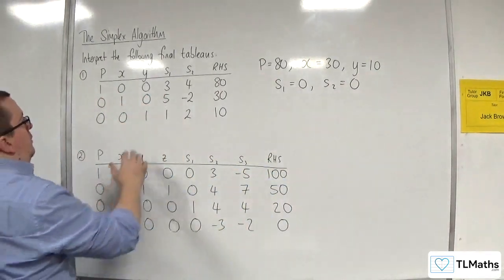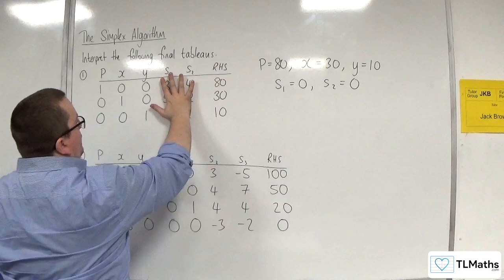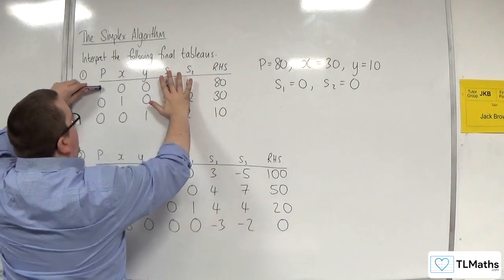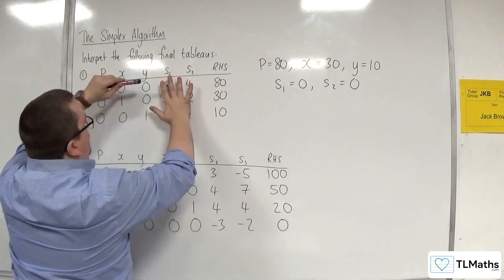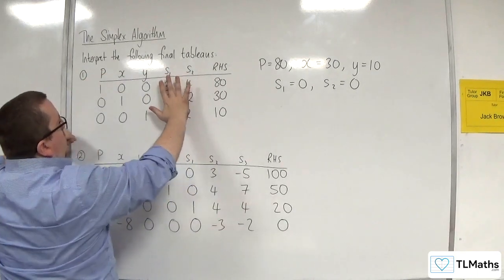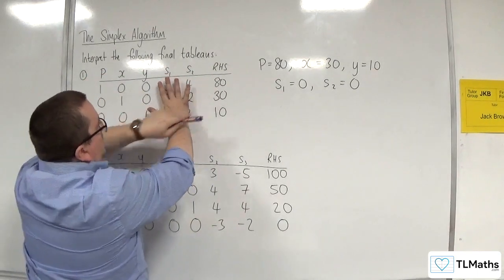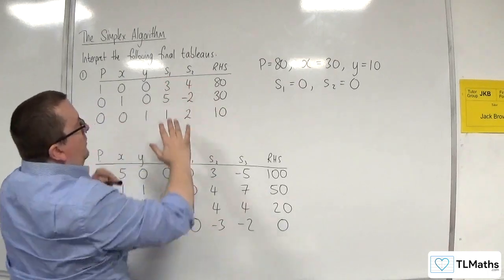Essentially, you're saying S1 and S2 are 0, so you can cover those up, and that allows you to then say, well, P plus 0x plus 0y is equal to 80, essentially. So X by itself is equal to 30, Y by itself is equal to 10.